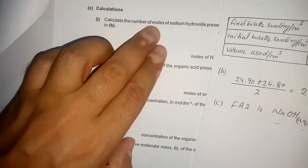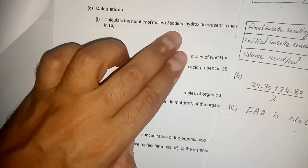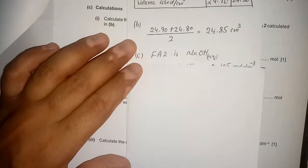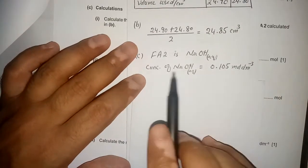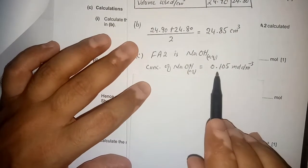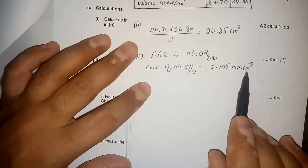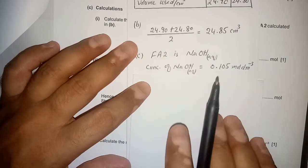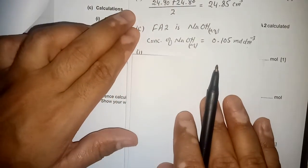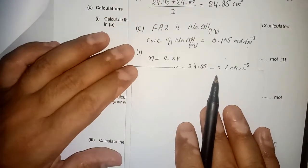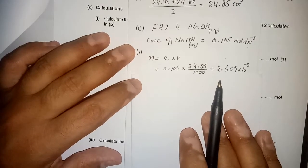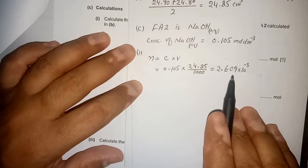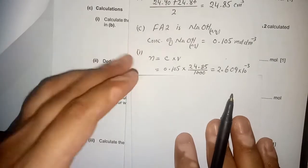To solve the next part, calculate the number of moles of sodium hydroxide. As given in the question, the concentration of NaOH is 0.105 mol/dm³, labeled as FA2. We use the formula n = CV, and by substituting the values we get the number of moles.